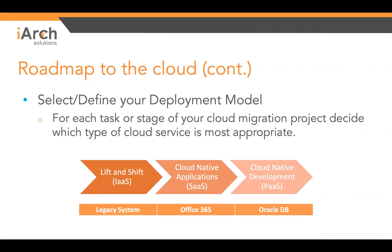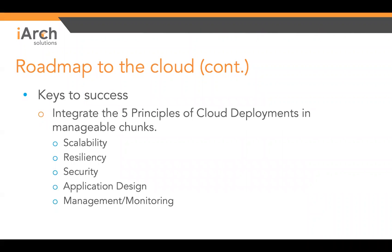Once we have inventory and information, we have to figure out our model to get to the cloud. There are multiple ways: a lift-and-shift approach, replacing software with new SaaS software, or possibly developing brand new — like rebuilding in a PaaS database environment. You'll figure out which bucket each tool falls into, and that's where you begin developing and budgeting your migration process. There are five key areas to think about for every piece of your cloud deployment: scalability, resiliency, security, app design, and management monitoring.